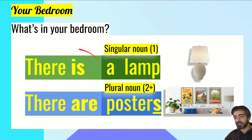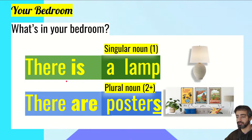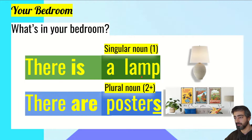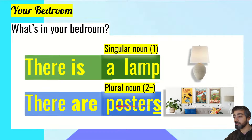Let's start by talking about 'there is' and 'there are.' We use 'there is' and 'there are' to show what you can find in a place. Like, in my bedroom there is a lamp. We use 'there is' with a singular noun — a lamp. In my bedroom there are posters, and we use 'are' with plural nouns. So: there is a lamp, and there are posters.